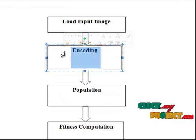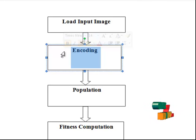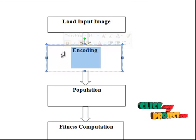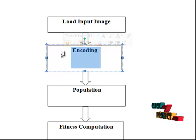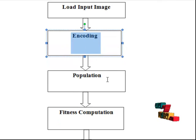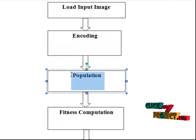Each chromosome represents a solution which is a sequence of K cluster centers. For an N-dimensional space, each cluster center is mapped to N consecutive genes in the chromosome. For image datasets, each gene is an integer representing an intensity value. And the next step is population initialization.